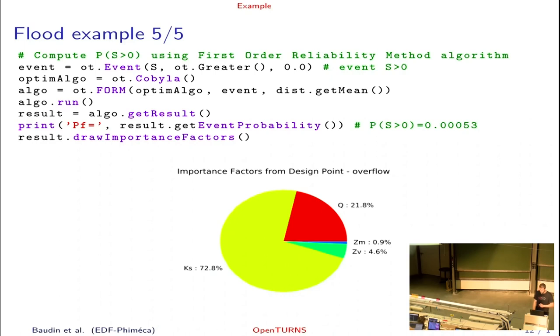Since it's the first order reliability method, we also get importance factors, which are a measure of sensitivity at the most probable point. And we can simply draw that. And if you're in a notebook, it just pops out into the output cell. And that's it for our example.